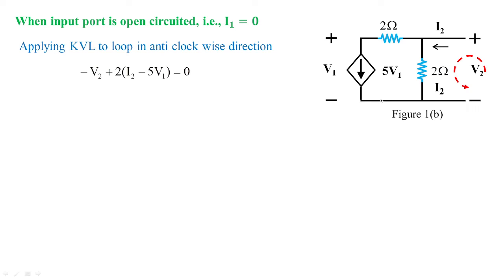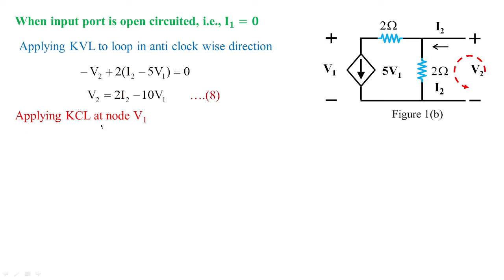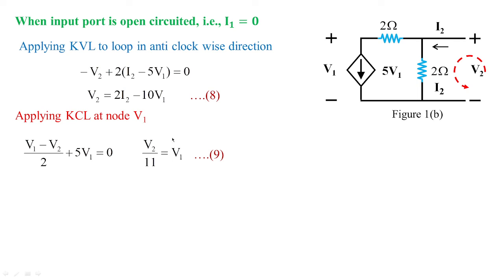Applying KVL gives: −v2 + 2·i2 − 5·v1 = 0, so v2 = 2·i2 − 10·v1 (equation 8). Also applying KCL at node v1: (v1 − v2)/2 + 5·v1 = 0 (since i1 = 0). Solving this KCL equation gives v1 = v2/11 (equation 9).